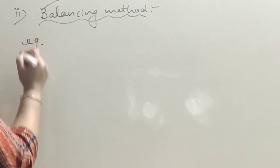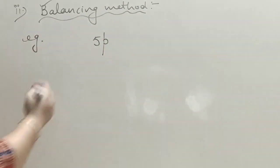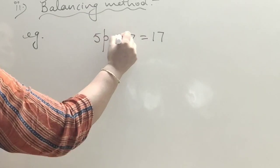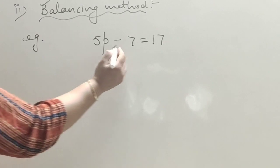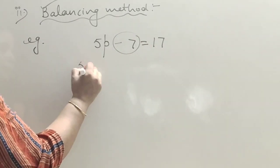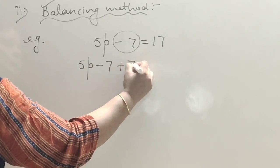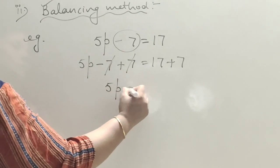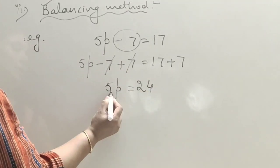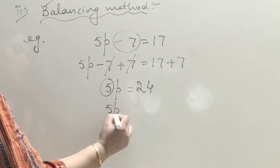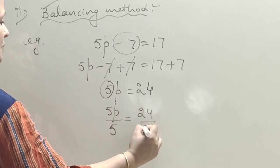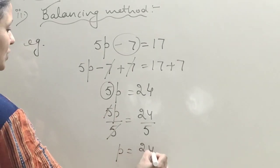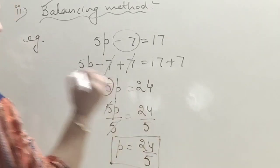Another example: 5p plus 7 is equal to 17. Here we need to remove plus 7, so we add minus 7 — that is, subtract 7 — from both sides. The 7 cancels, leaving 5p equals 17 minus 7, which is 10. Then dividing both sides by 5 gives p equals 2, which is the value of the variable.